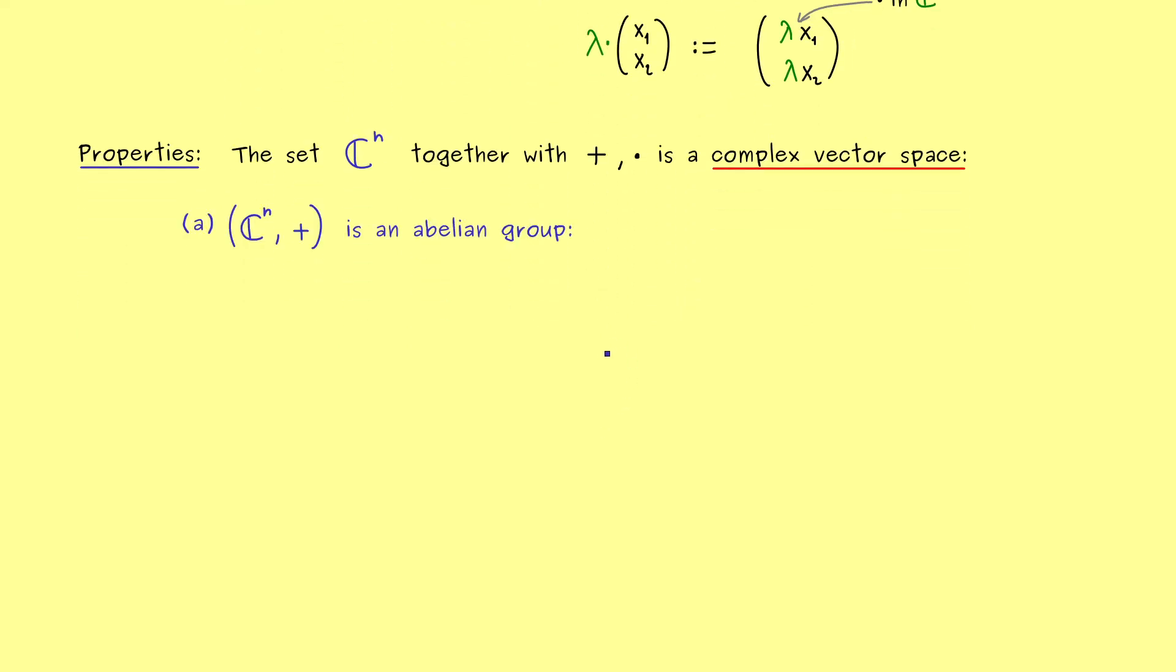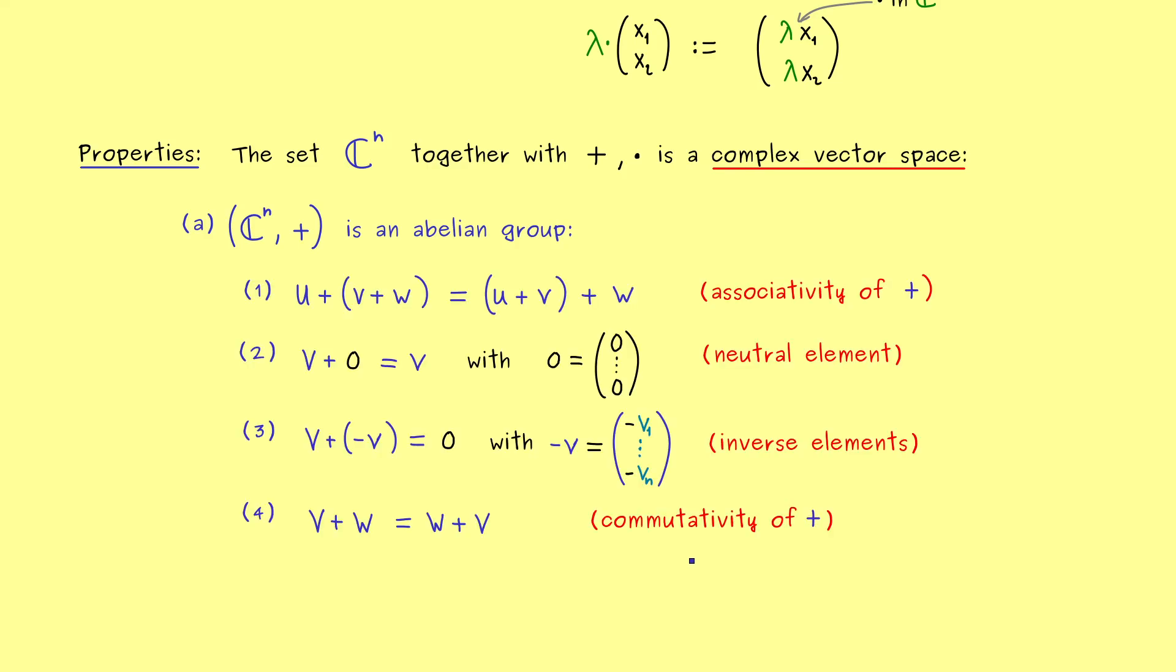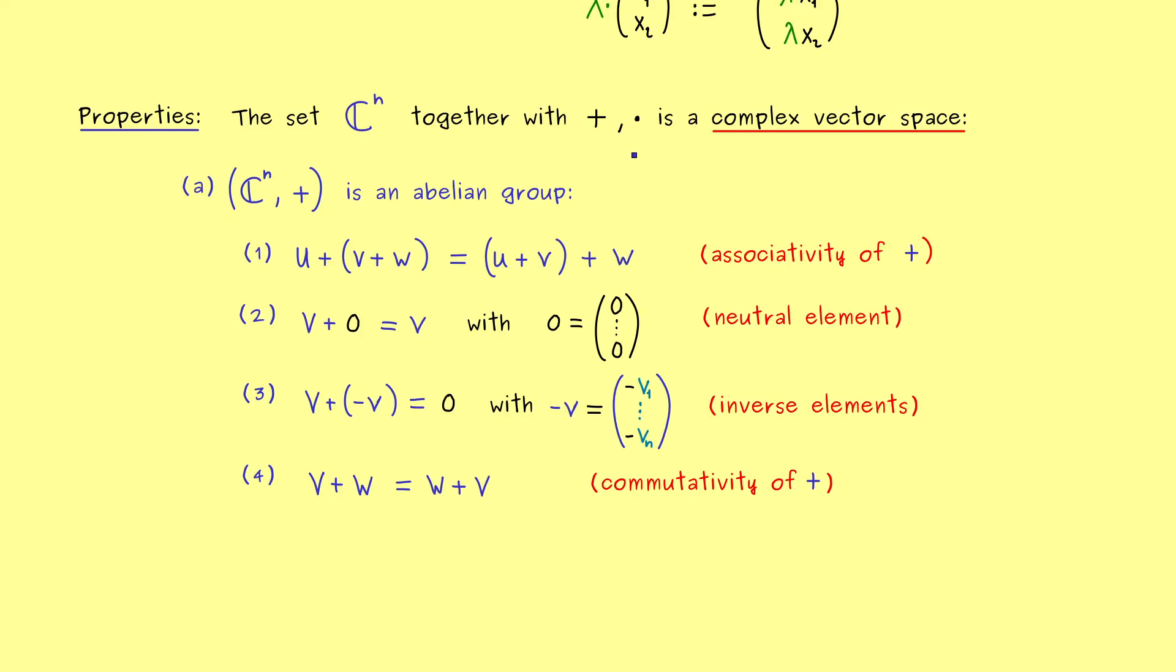Okay here I would say it's helpful to recall all the properties we have put to a vector space. First we need that the set together with the vector addition is a so called abelian group. And this means we have exactly four properties which are not so complicated and listed here. So you see setting the parentheses as we want is what we call associative. Having a zero element that does nothing is what we call a neutral element. And having an inverse with respect to this neutral element is what we also require for all v's. And then the last one just tells us that the addition is also commutative.